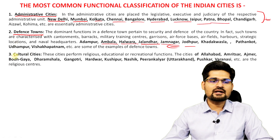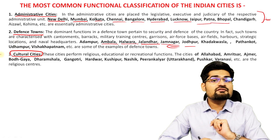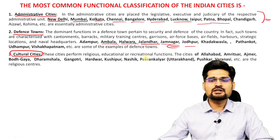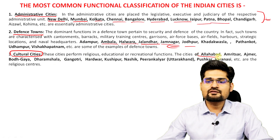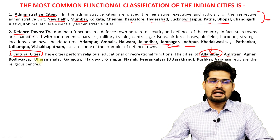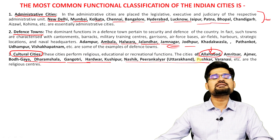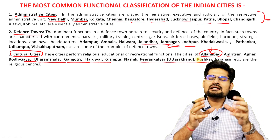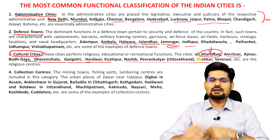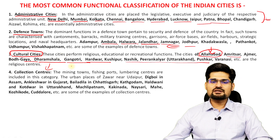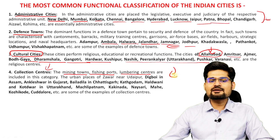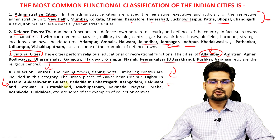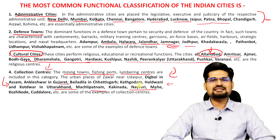The third category is cultural towns and cities, known for cultural, religious, and socio-economic functions. Examples include Allahabad (now Prayagraj), Amritsar, Bodhgaya, Dharamshala, Gangotri, and Haridwar — known for particular cultures, worship sites, and religious connotations. The fourth category is collection centers: mining towns, fishing ports, and lumbering centers that are economically highlighted. Examples span from Gujarat to Uttarakhand, including Machilipatnam, Cuddalore, and several others.